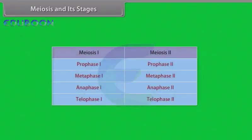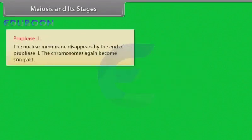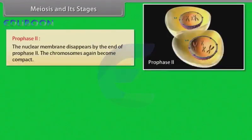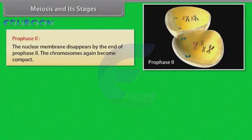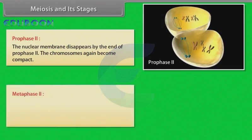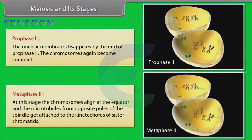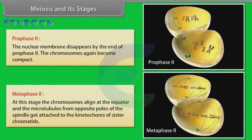Meiosis two is initiated immediately after cytokinesis, usually before the chromosomes have fully elongated. In contrast to meiosis one, meiosis two resembles a normal mitosis. The nuclear membrane disappears by the end of prophase two. The chromosomes again become compact. After prophase two, metaphase two takes place. At this stage, the chromosomes align at the equator and the microtubules from opposite poles of the spindle get attached to the kinetochores of sister chromatids.